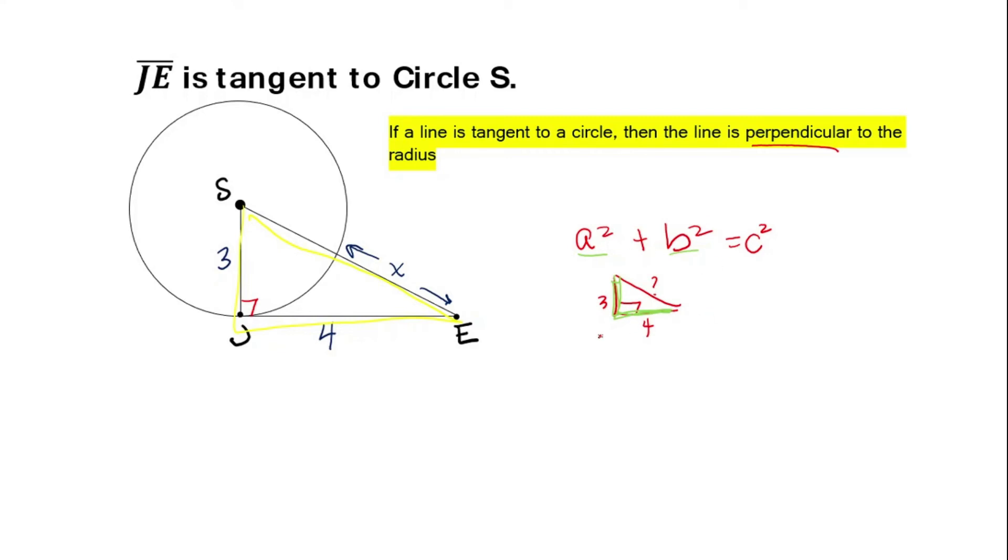So let's plug this stuff into Pythagorean theorem. 3 squared plus 4 squared equals c squared. 3 squared plus 4 squared is 25, so c is equal to 5.